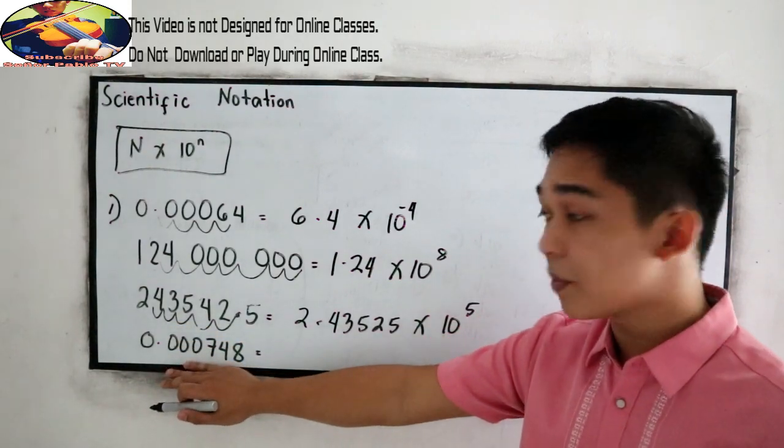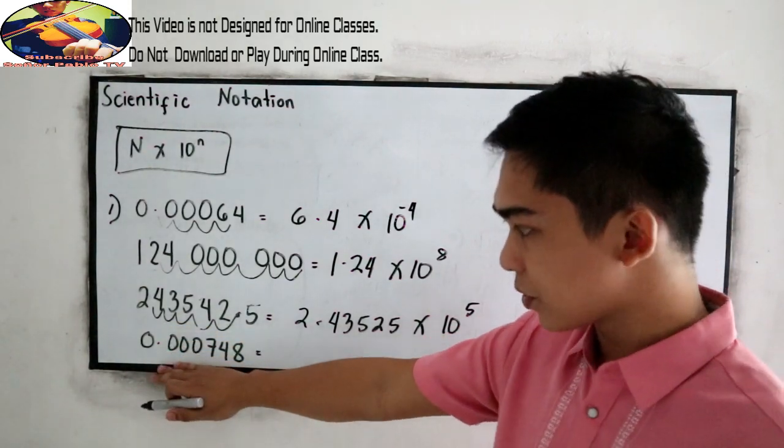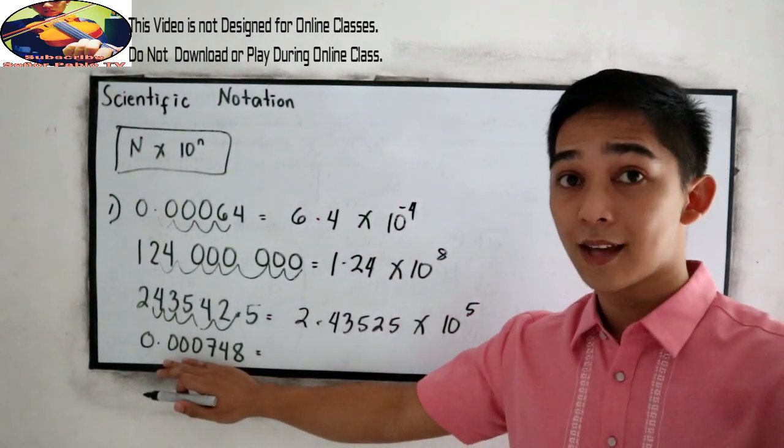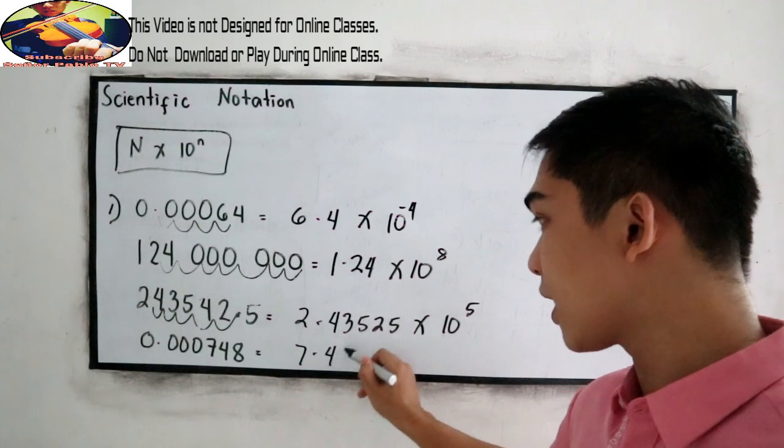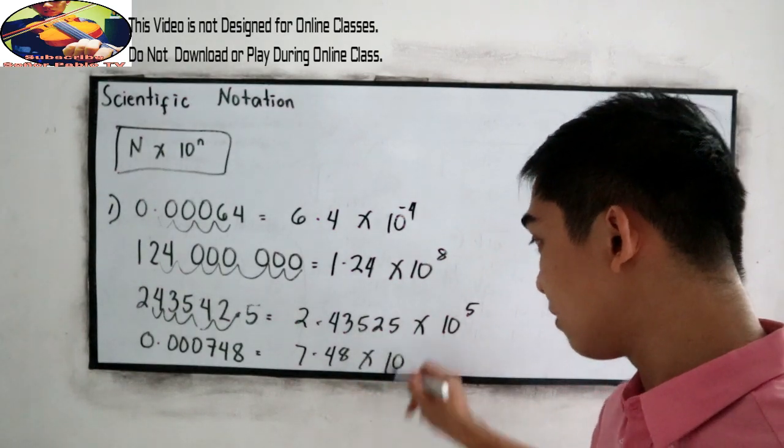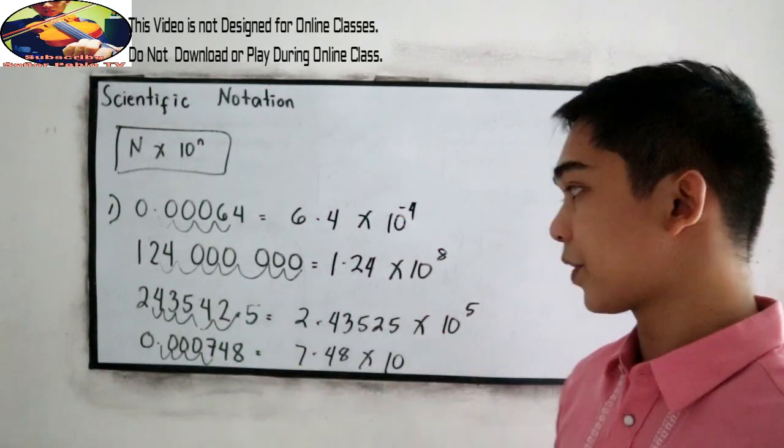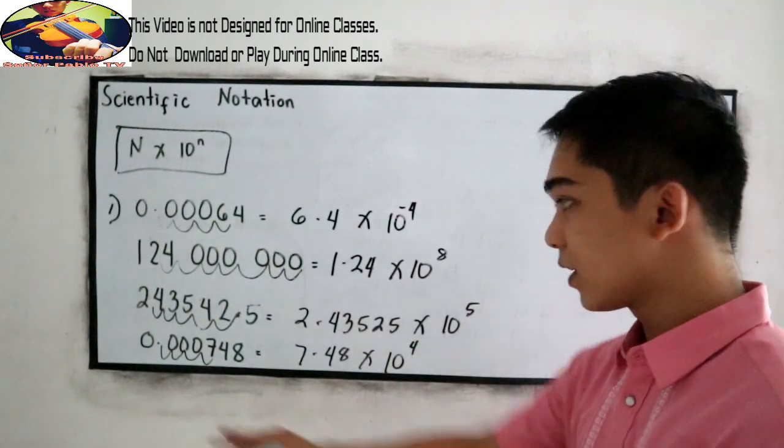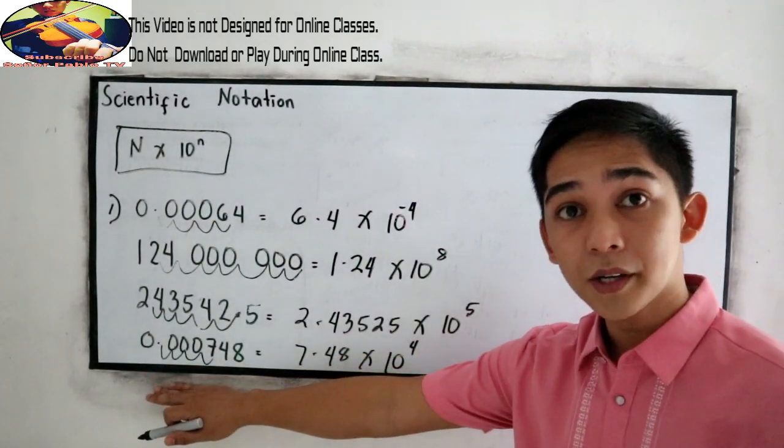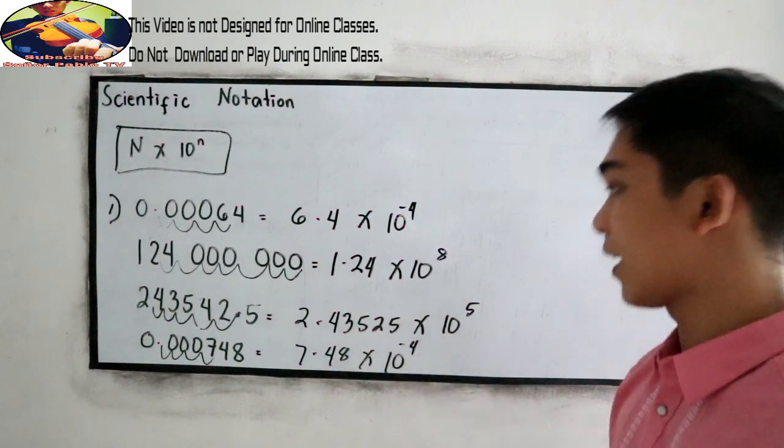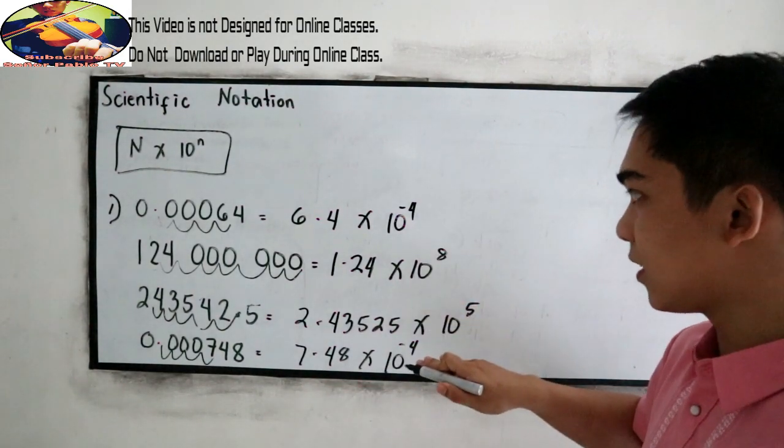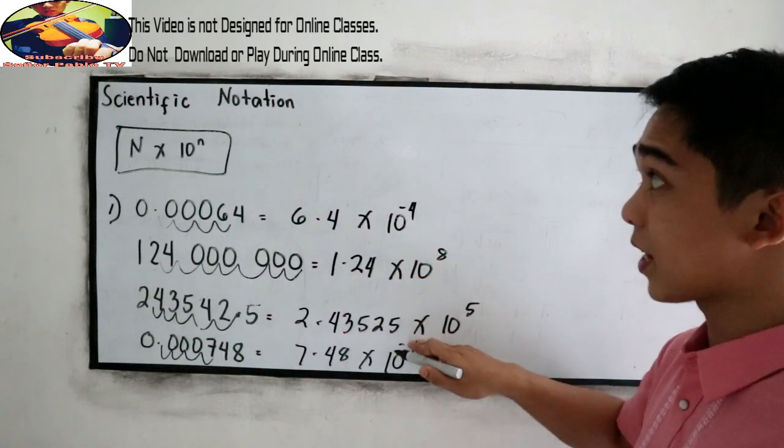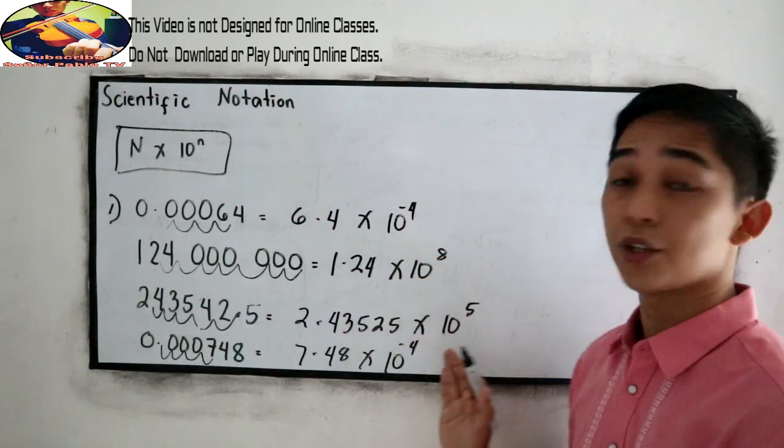And our last example, we know that 0.000748 has a small volume. So that will become 7.48 times 10, 1, 2, 3, 4. So 4, this number, so that is negative. So this will be our scientific notation form.